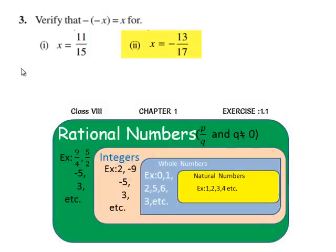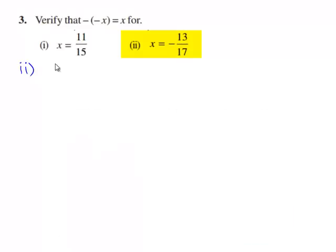Now let us move on to the second bit. Here we need to verify that minus of minus x is equal to x for x is equal to minus 13 by 17.